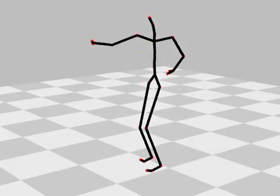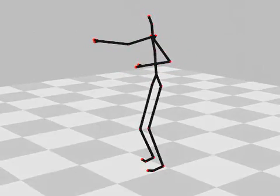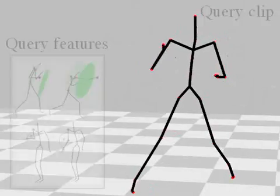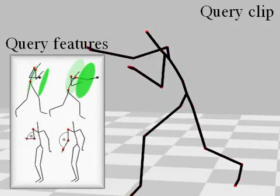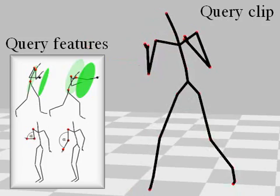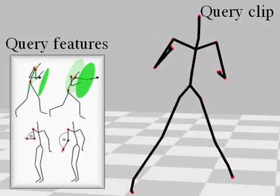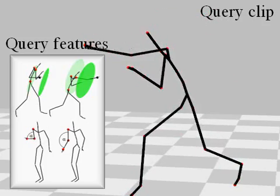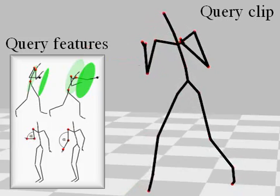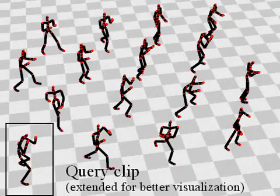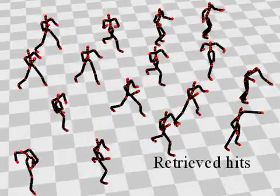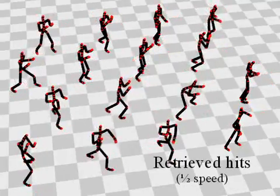Identifying and extracting suitable motion clips from a given database has become an important task in data-driven computer animation. In our setting, a query is given as a short example motion and a suitable feature selection. Then, the aim is to automatically retrieve all motion clips from the database that are logically similar to the query.